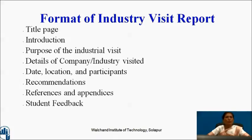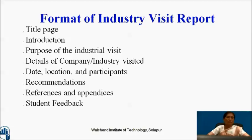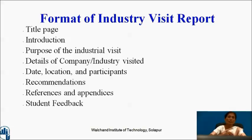The format of the industry visit report begins with the title page, which includes the title, institution's name, guided by, submitted by, date, and place. Then comes the introduction of the industry: who organized the visit, for whom it is organized, and for what purpose. Details of the company follow — prior networking may assist in arranging the visit. Then the date, location, and participants are recorded for observation and experimental purposes.